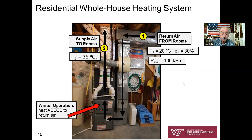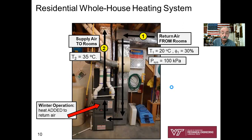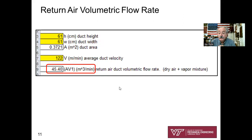Let's start with a sketch — I'll use the photograph. State one is the return air from the rooms coming in and making a 180-degree turn; here we add heat for winter operation, going up to state two at 35°C. State one comes in at 20°C, 30% relative humidity, and 100 kPa system pressure. The volumetric flow rate is simply the cross-sectional area of the duct times the average velocity: 45.4 cubic meters per minute.